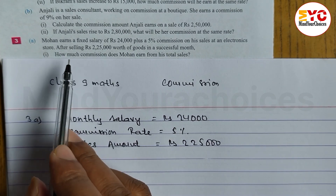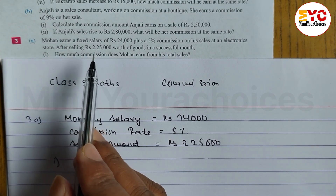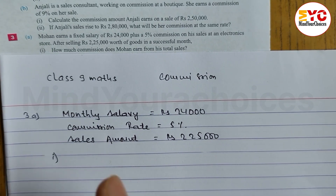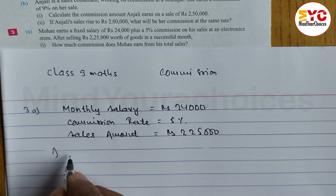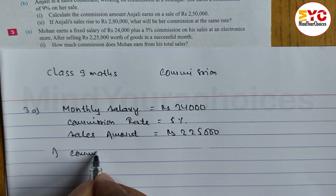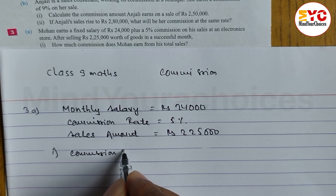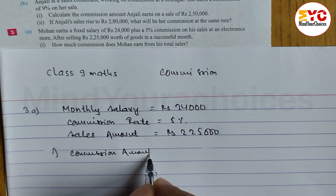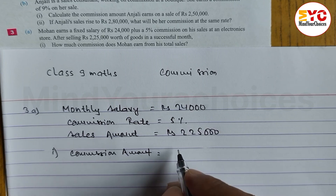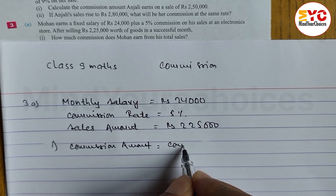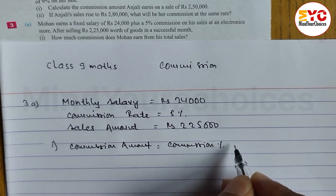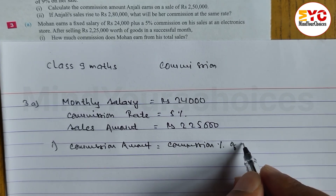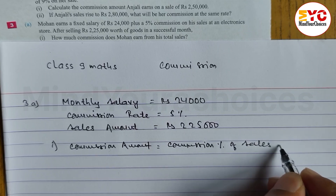In number 1, what we have to find out is how much commission does Mohan earn from his total sales. Commission amount — what is the formula? Commission percent of total sales, or sales amount. So we can write down here: commission percent of total sales, or sales amount.